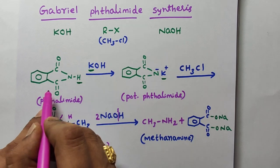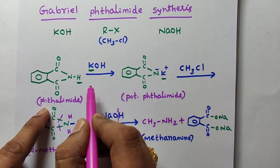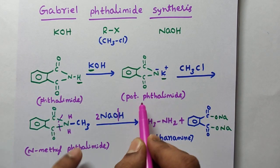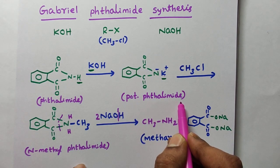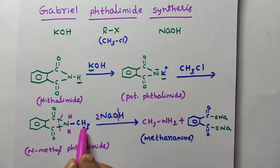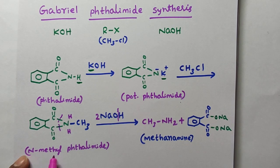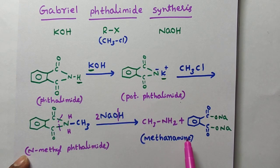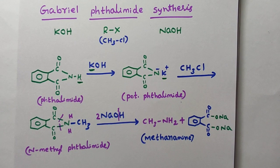Let us recap the names. This is Phthalimide. Here hydrogen is replaced by potassium — that's why it's called potassium Phthalimide. Here instead of hydrogen, a methyl group is attached to nitrogen — that's why N-methyl Phthalimide. And the final product is methylamine (CH3NH2), also called methane amine. Take a screenshot and write in your class notes. Thank you, bye.